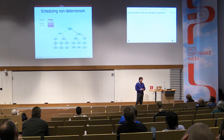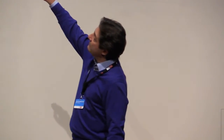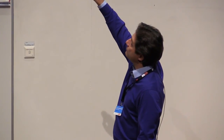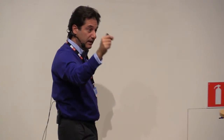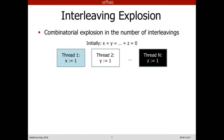You need something to combat the combinatorial explosion, and it gets worse. Even in a simpler program with N variables and N threads, each accessing its own variable, if you enumerate all possible interleavings naively, the number is exponential in the number of threads. But the outcome is just one. Ideally you'd want something that explores this case with just one trace and figures out that there is only one possible outcome.